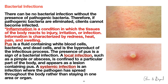There can be no bacterial infections without the presence of pathogenic bacteria; therefore, if pathogenic bacteria are eliminated, clients cannot become infected. Inflammation is a condition in which the tissue of the body reacts to injury, irritation, or infection, characterized by redness, heat, pain, and swelling. Pus is a fluid containing white blood cells, bacteria, and dead cells — the byproduct of the infectious process. A local infection such as a pimple or abscess is confined to a particular part of the body. A systemic infection is one where the pathogen has spread throughout the body rather than staying in one area.